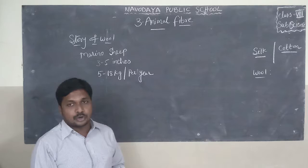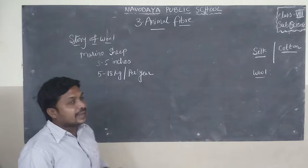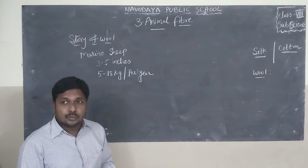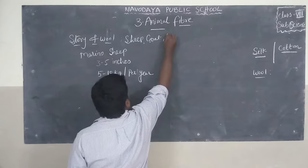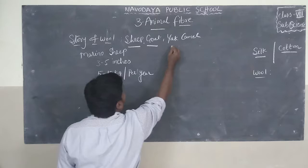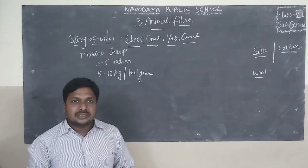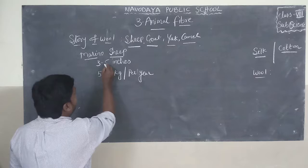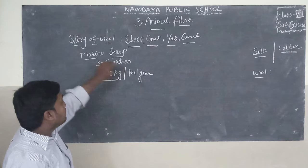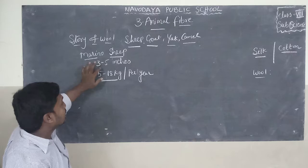In this class, I will explain about the story of wool from the animal fiber lesson. Wool is obtained from sheep, goat, yak, or camel. Do you know, Merino sheep is a breed that gives 5 to 18 kg of wool per year.